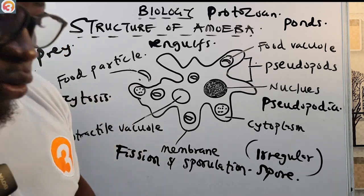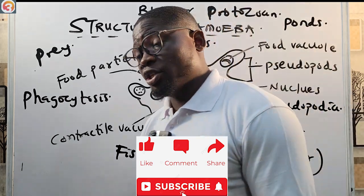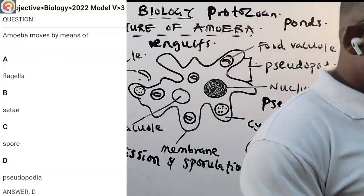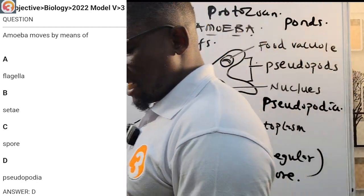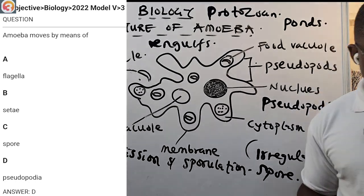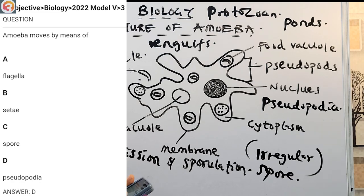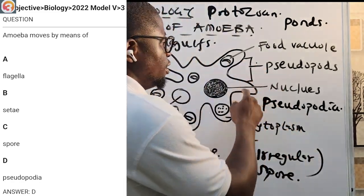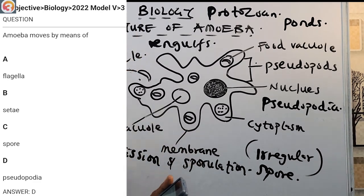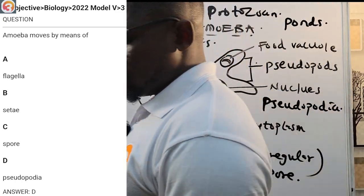Let's go to the Old School JAMB app. Please like the video, subscribe, and share. Now, 2022 question number three: 'Amoeba moves by means of A) flagella, B) seta, C) spore, D) pseudopodia.' The correct answer is D — pseudopodia. You can see the pseudopods here — the extended parts of the cell membrane that help the amoeba move and catch its prey.